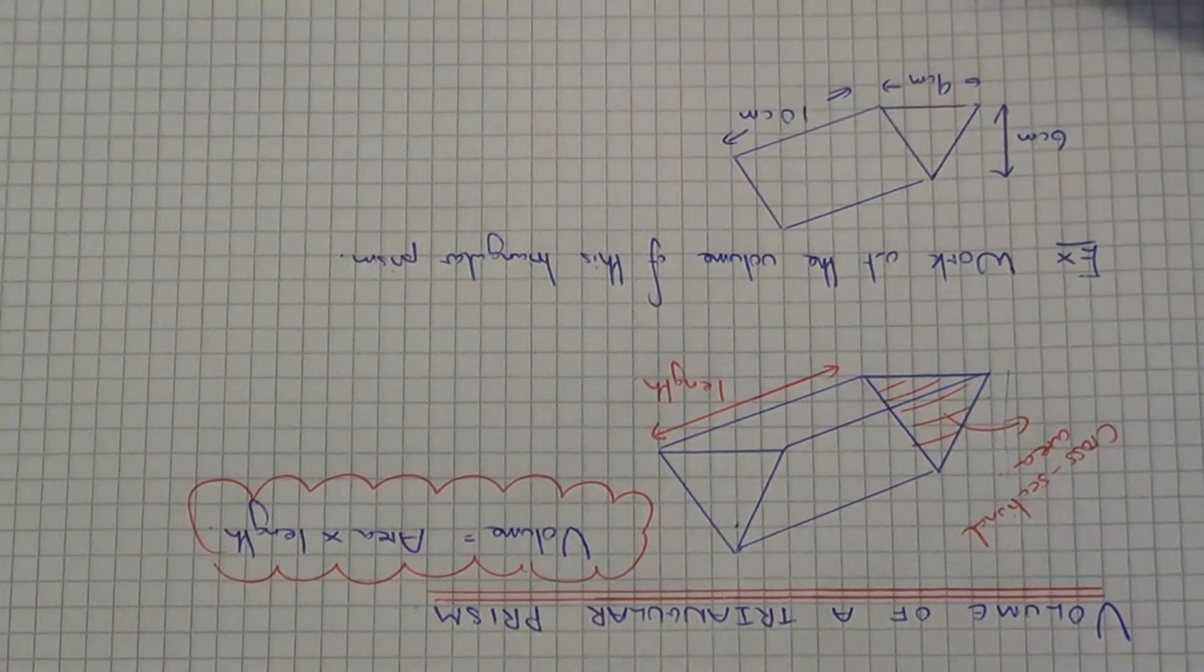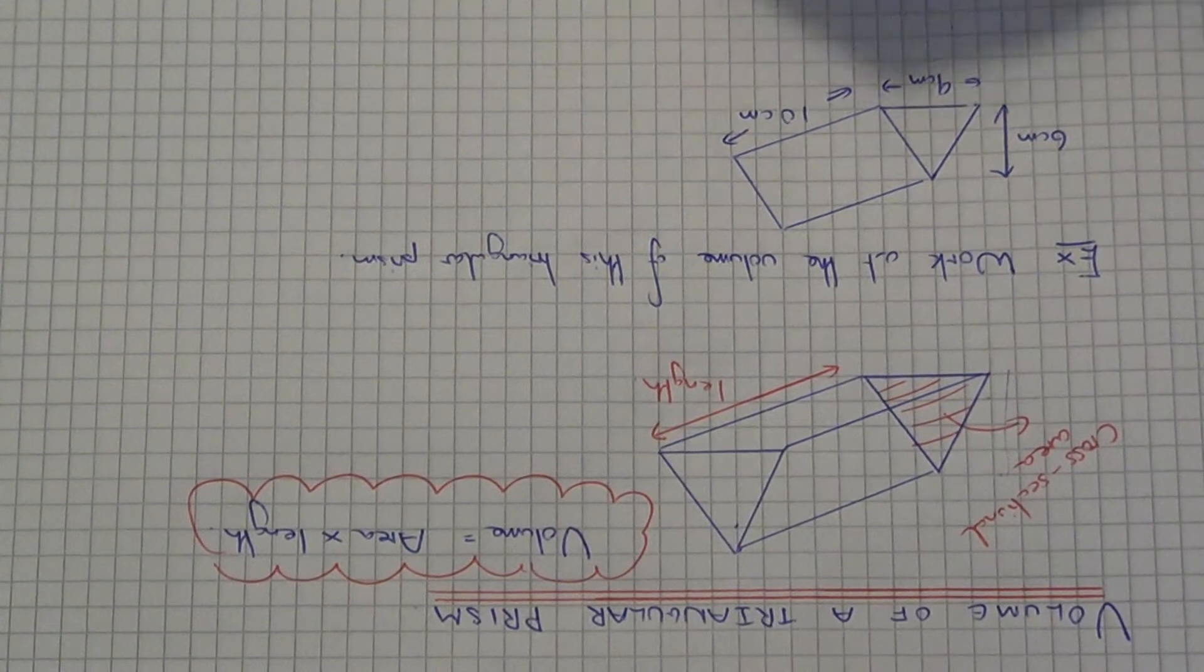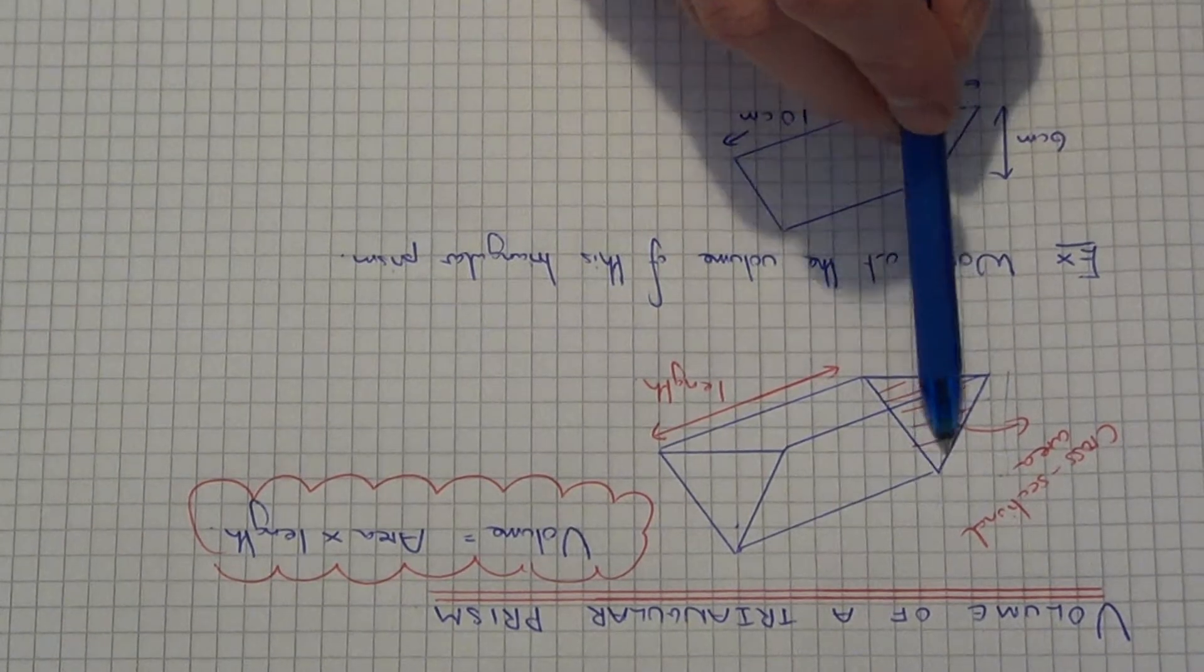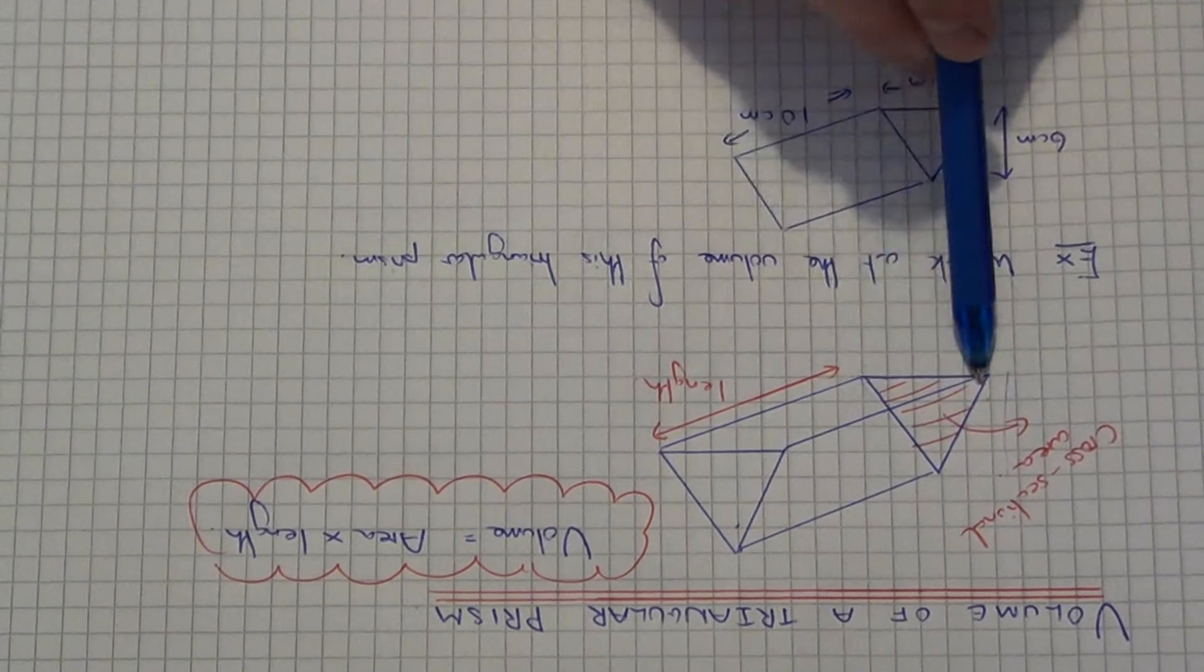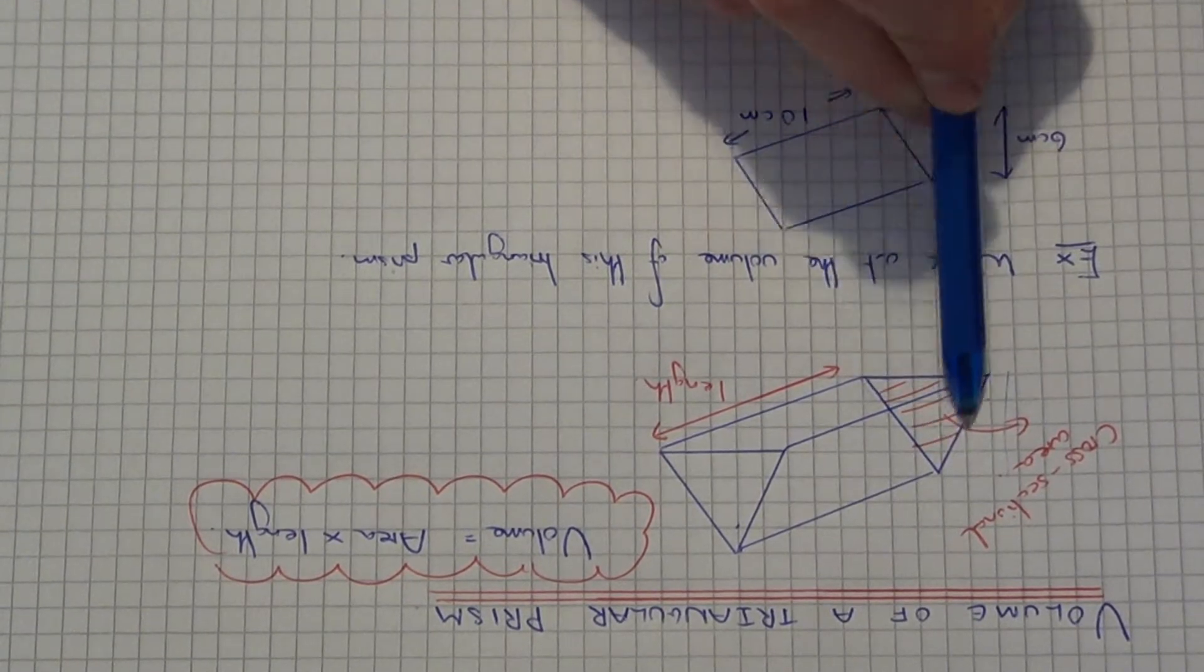To work out the volume of a triangular prism, first you'll have to work out the area of the triangle at the front of the shape. This is called the cross-sectional area of the prism.